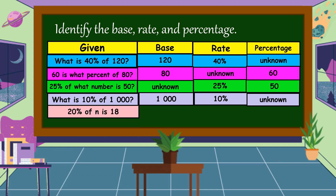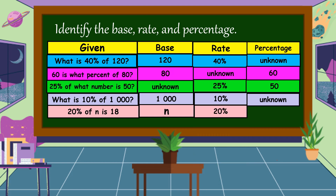Next: 20% of N is 18. What is the missing part? We're going to find the base, that is N. We don't know yet what the value of N is. 20% is the rate, and 18 is the percentage.